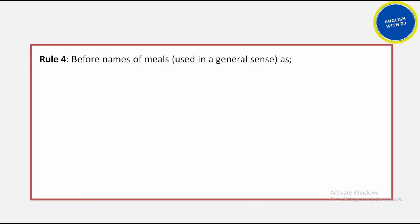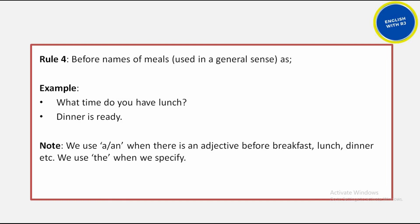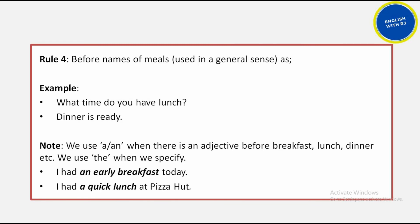The fourth rule is about meals — we don't use any article before meal names. For example, 'What time do you have lunch?' — no article before 'lunch.' 'Dinner is ready' — no article. However, when an adjective is placed before the meal name, an article can be used: 'I had an early breakfast today' or 'I had a quick lunch at Pizza Hut' — here 'early' and 'quick' are adjectives, which is why the article appears.